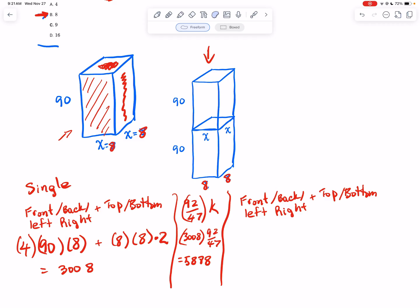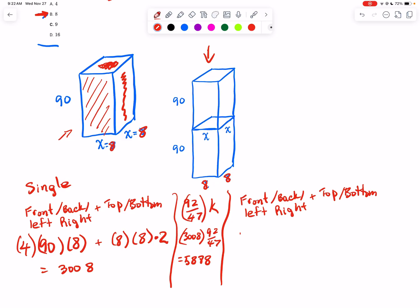The top and the bottom - let's do that last. Let's do the front, back, left, and right. Now the front, back, left, and right has a height of 180 because it's twice as tall now, and we're multiplying that by 8, and there are four of those.